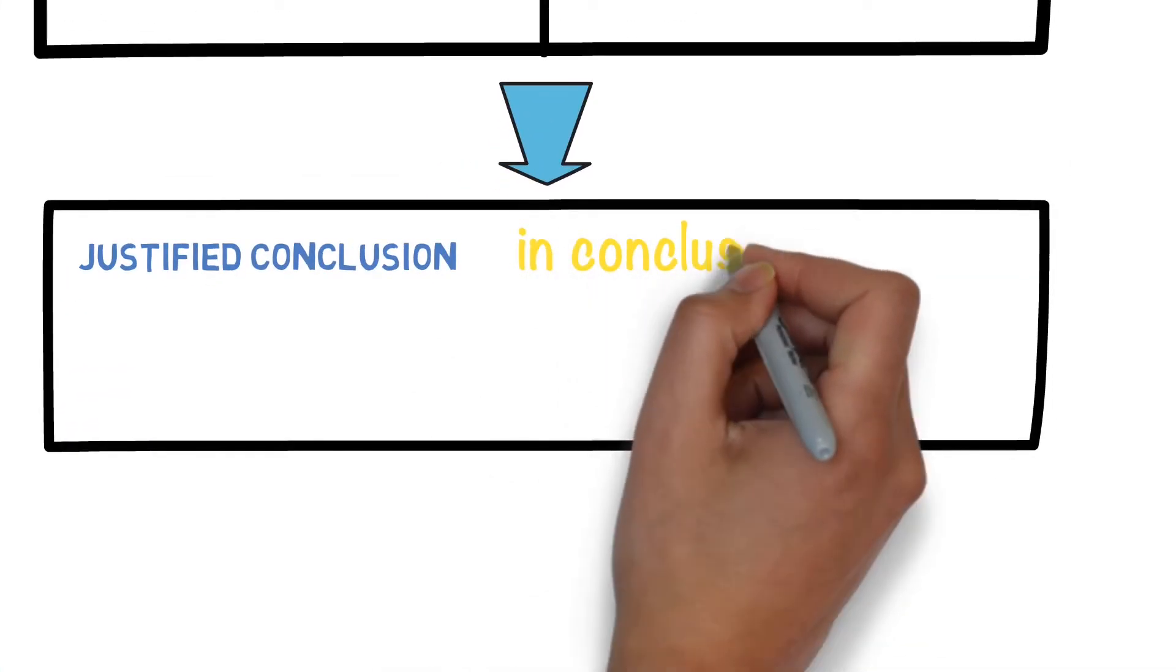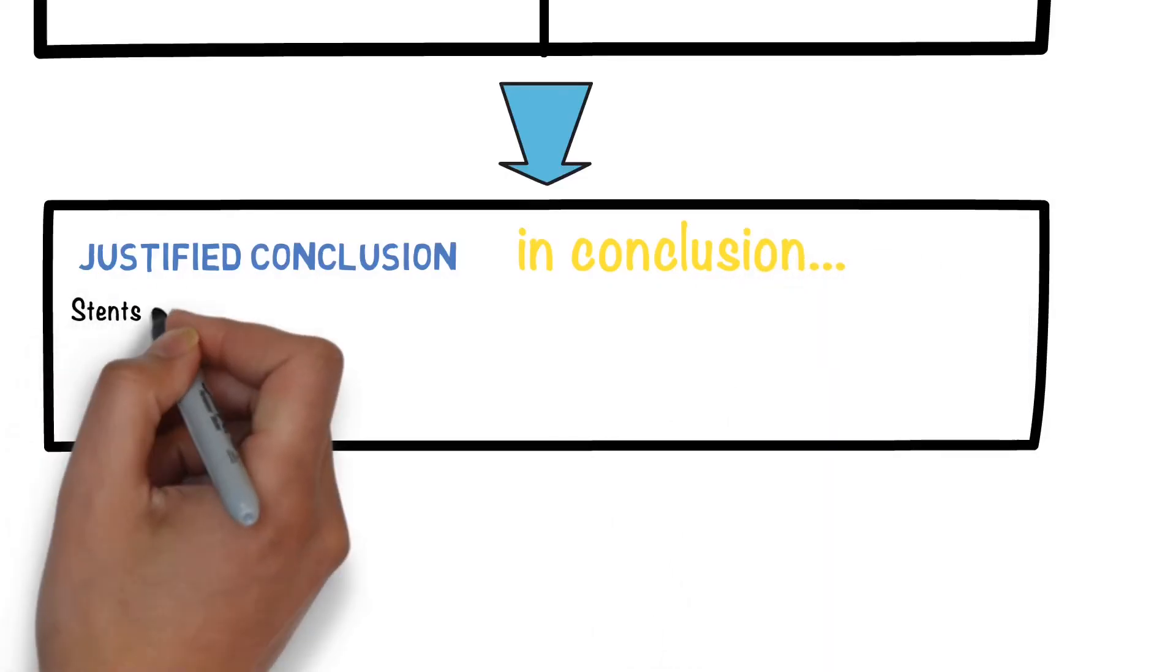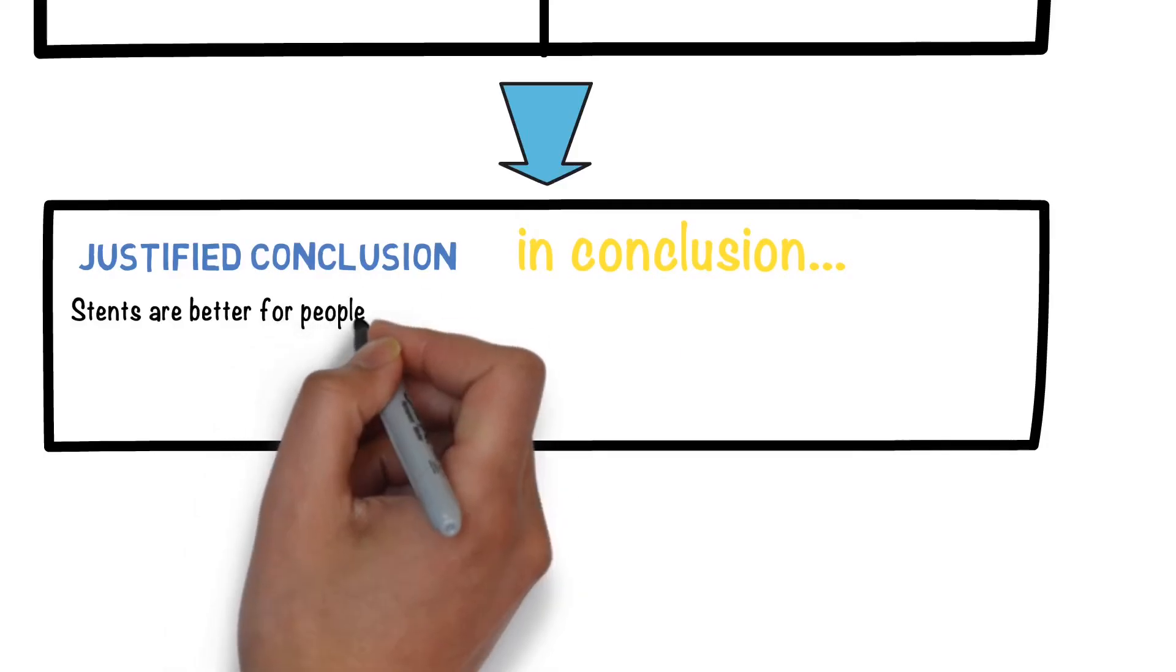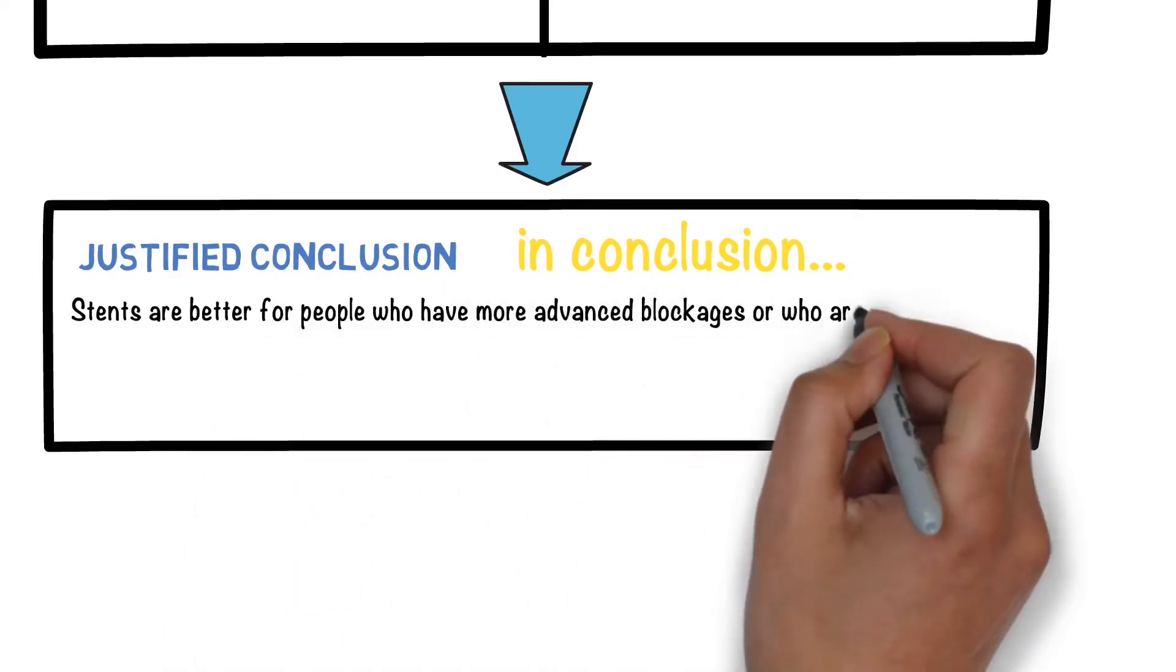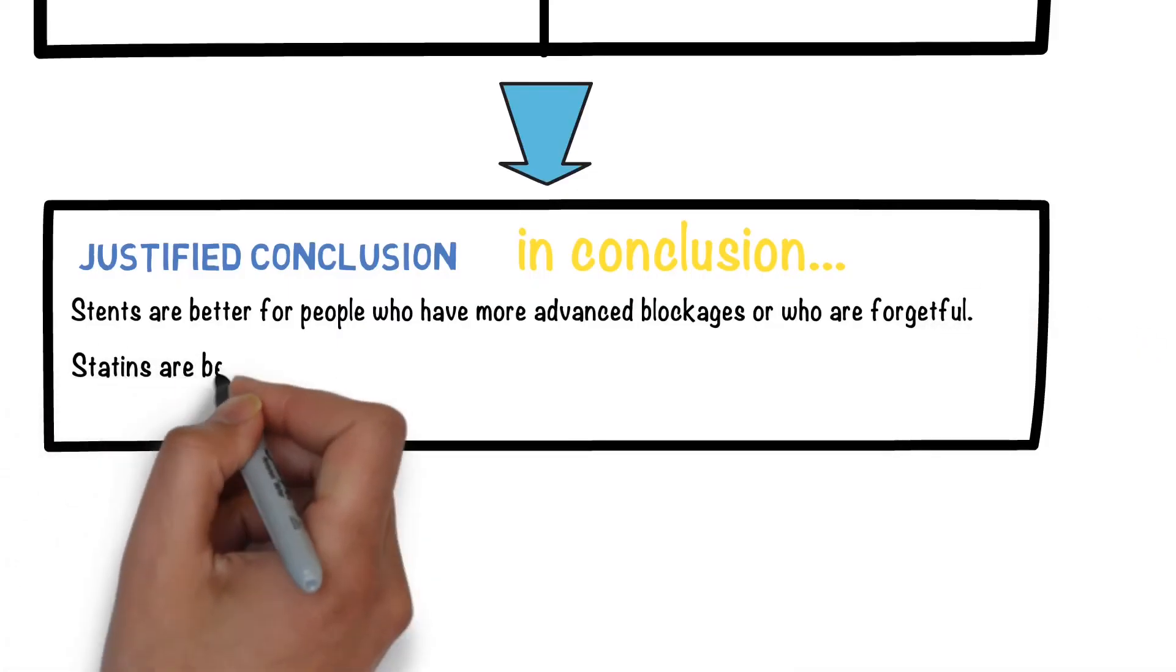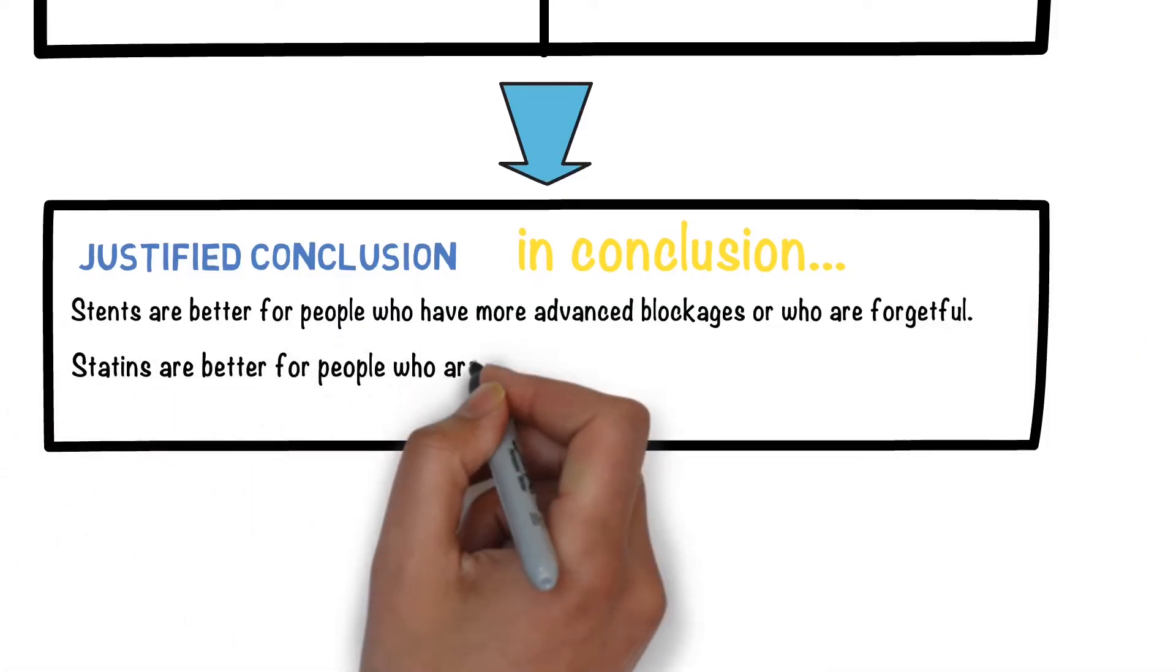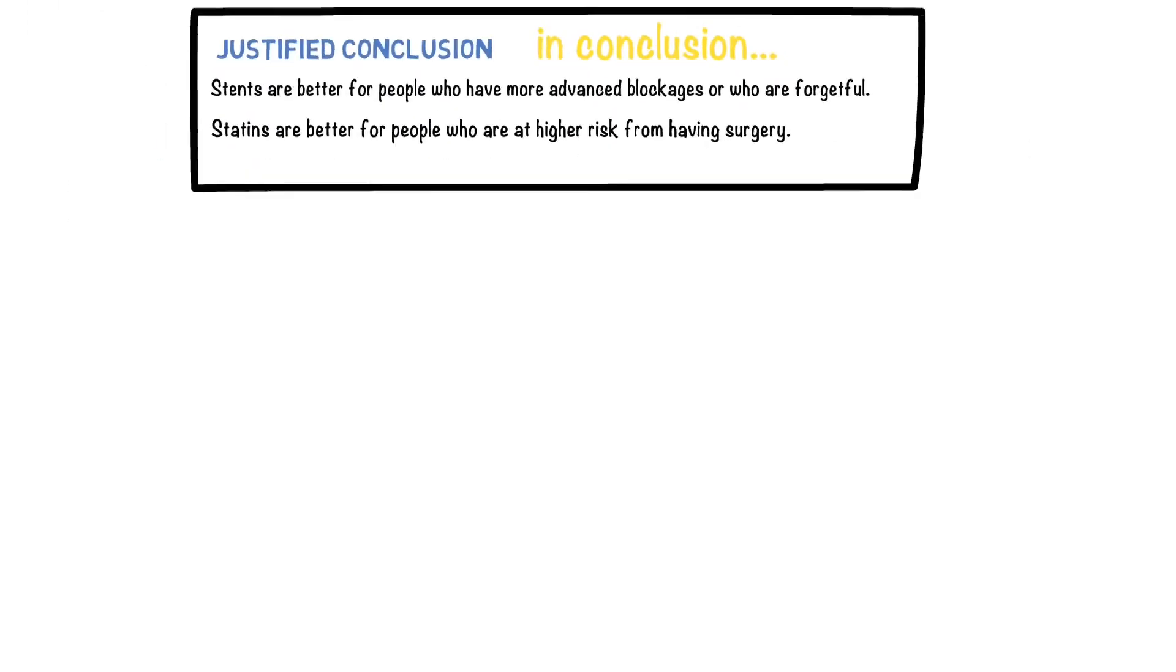So when you then get on to your justified conclusion, you start off by writing 'in conclusion' and you can write whatever you like here. So I'm saying stents are better for people who have more advanced blockages or who are forgetful. In other words they don't have to think about taking statins. Statins are better for people at higher risk from having surgery. And that would get me the marks as long as my conclusion relates to the pros and cons. It doesn't really matter what I write.